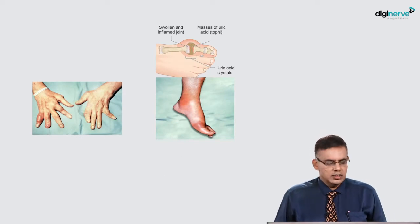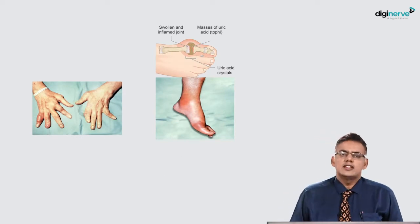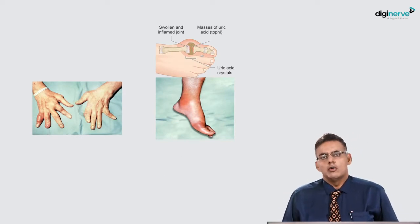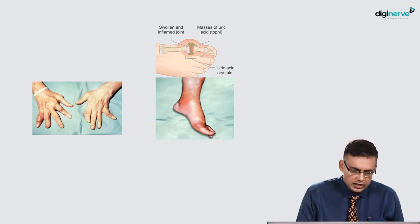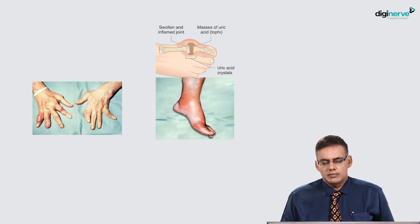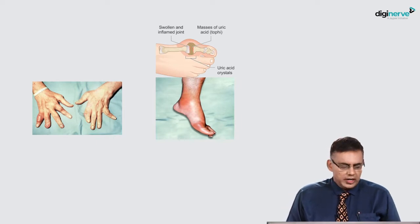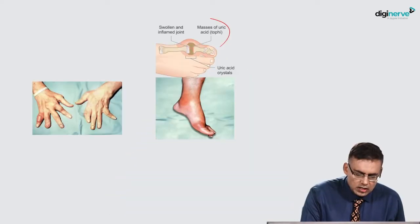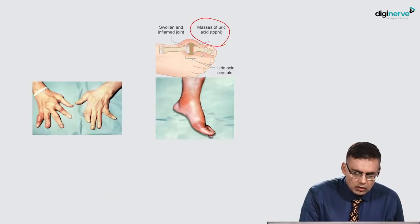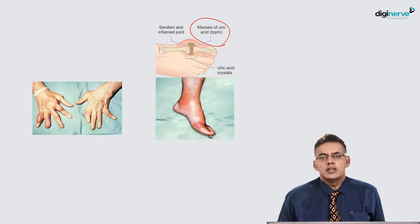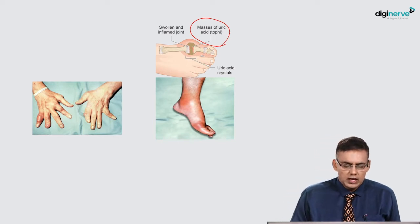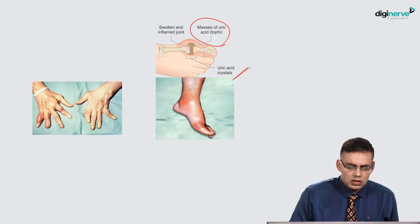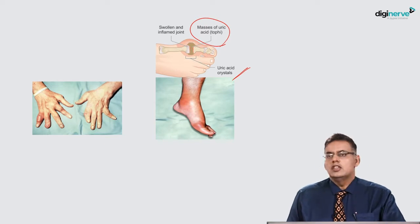This image gives you the classical presentation of gout. It is basically going to cause pain and swelling in the MP joints, and it could also result in swollen joints. These are because of accumulation of uric acid masses called tophi, or the presence of uric acid crystals in these joints.